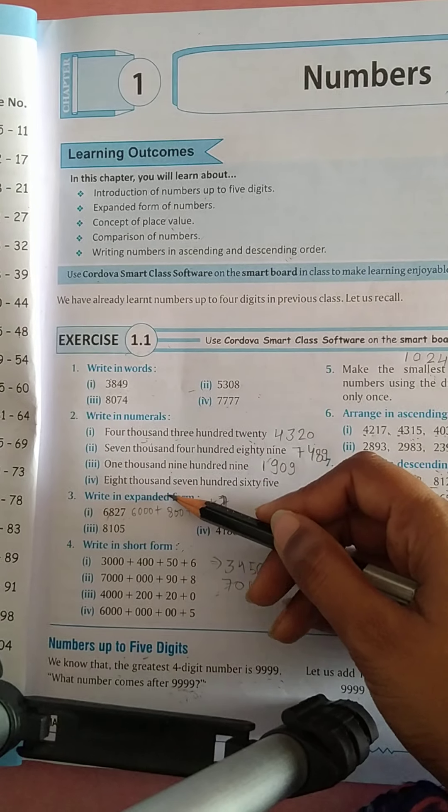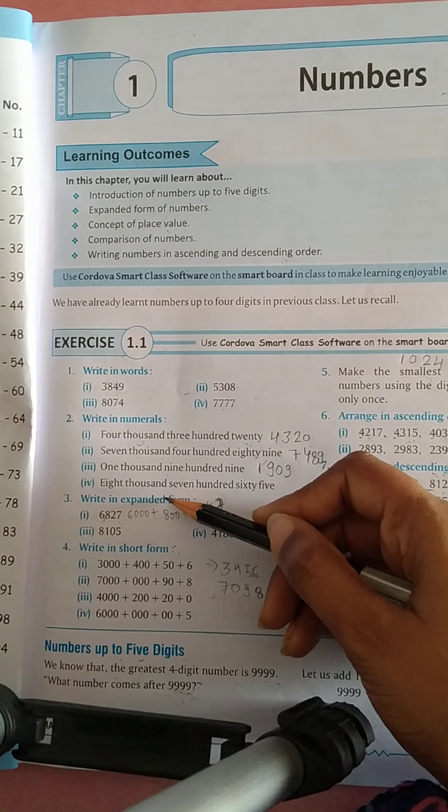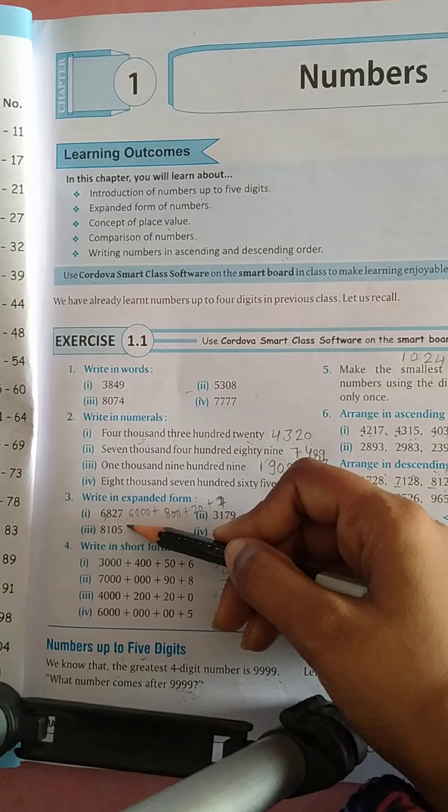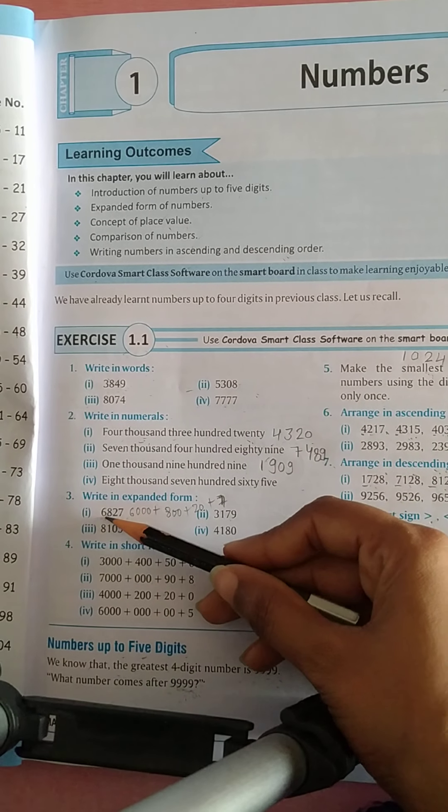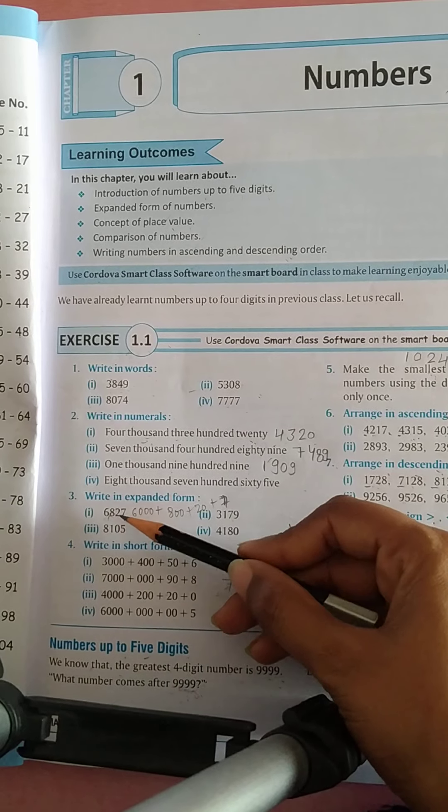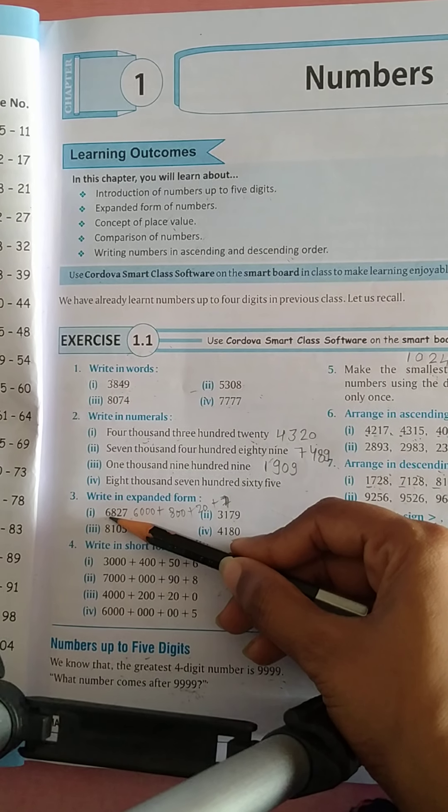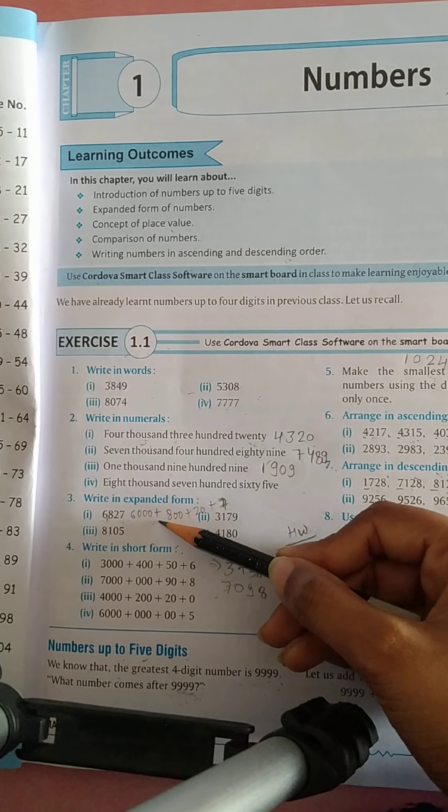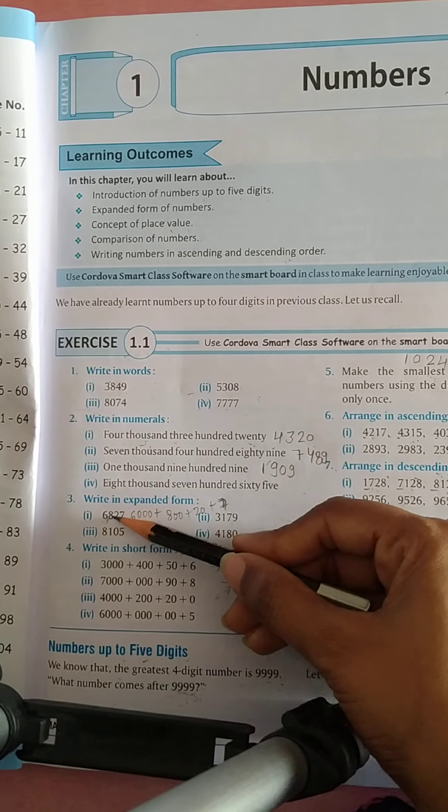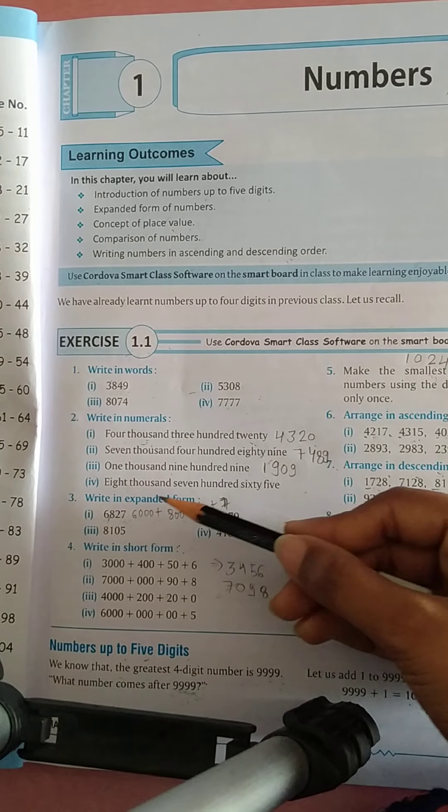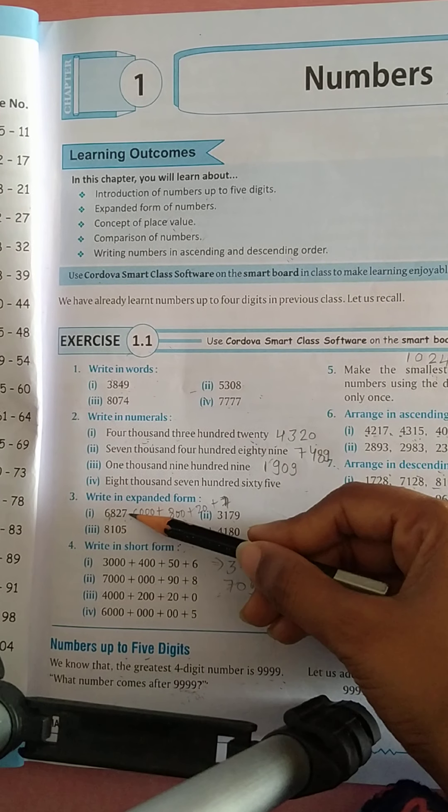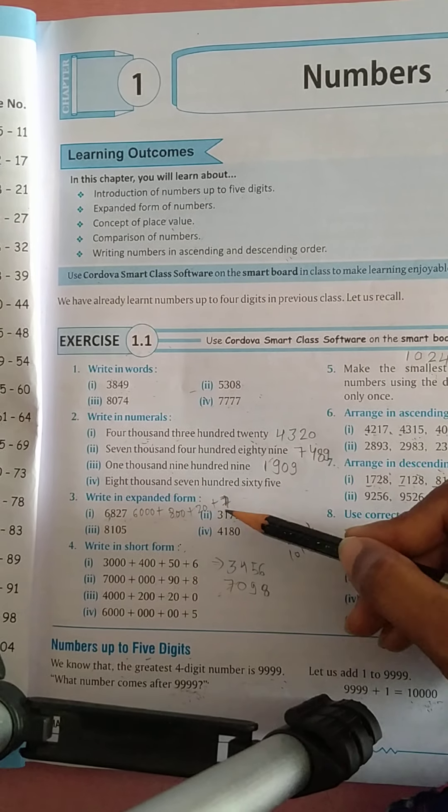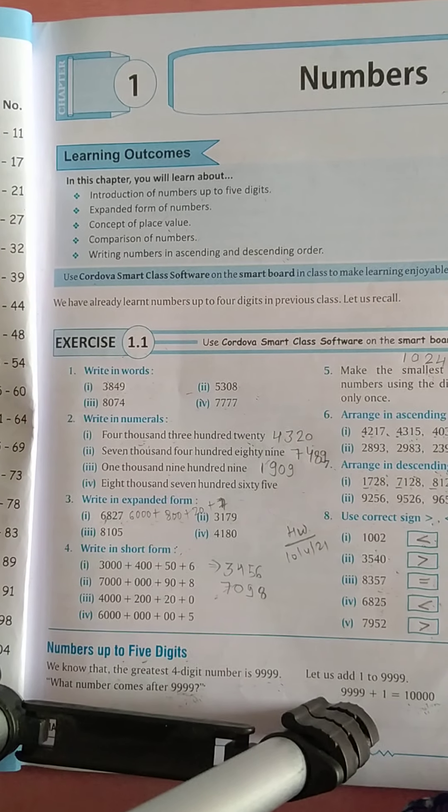Now question number 3, write in expanded form. Expanded form is the sum of the place values of the digits in a number. So the first number is 6,827. The first digit is 6, place value of 6 is 6,000. Then plus place value of 8 is 800. Plus place value of 2 is 20. And plus place value of 7 is 7. So इस तरह से इनको expanded form में write down करना है.